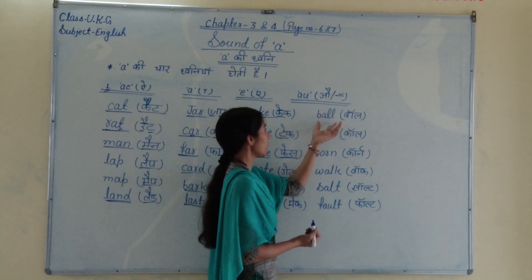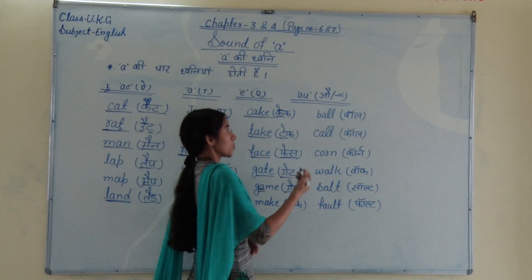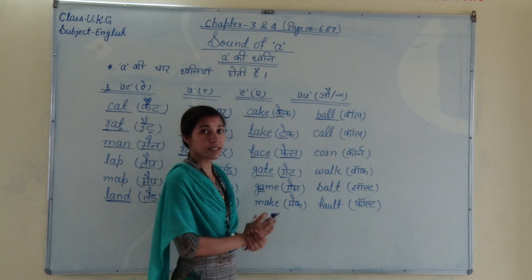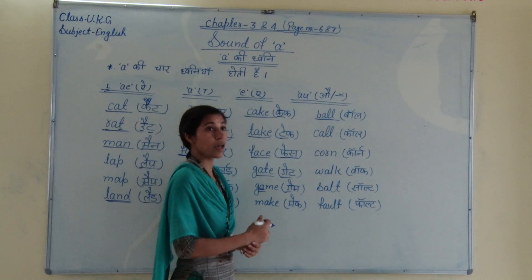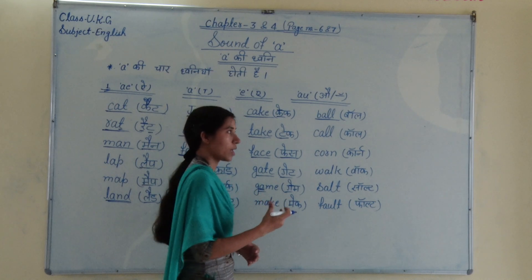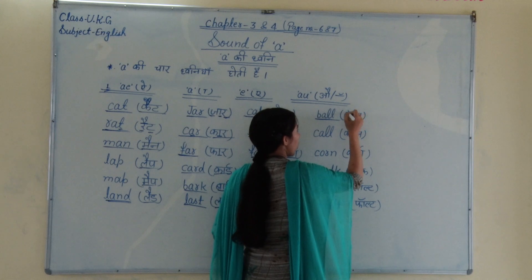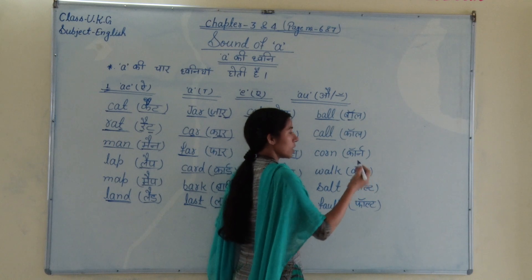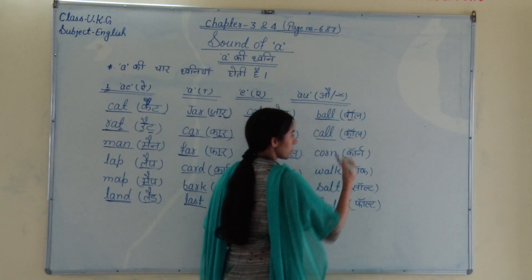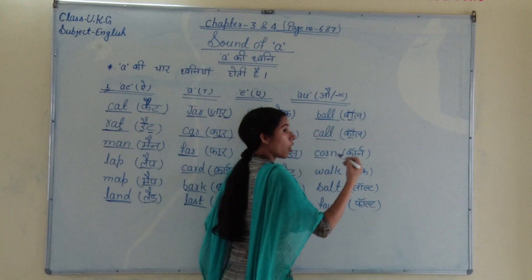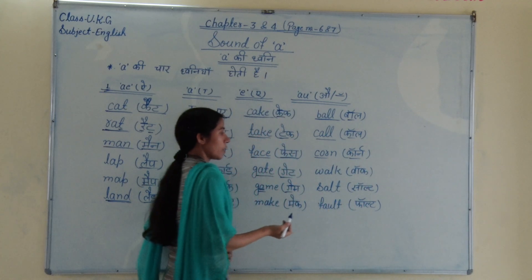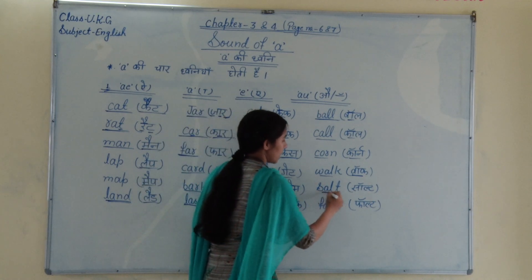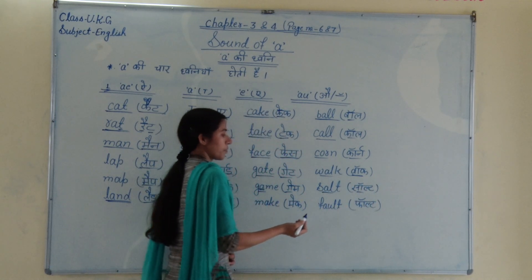Ab last hai akka: 'a' ka ucchaaran au ke rupi. Au — toh yahan pe dekhi ki b-a-double l — ball. Iska ucchaaran, iska pronunciation kya kahte hain? Au — ball. Toh yahan pe dekhi ki 'a' ka ucchaaran au ke rupi hora hai. Ball, phir hai akka: call. Call — au ke rupi — call. Phir hai: ball. Uske baad hai akka: sound — font. This is one of the first.